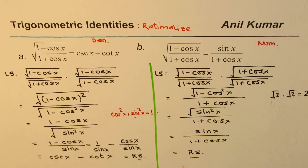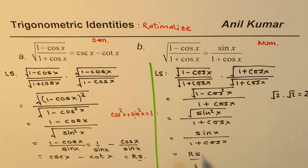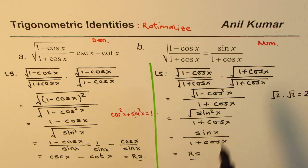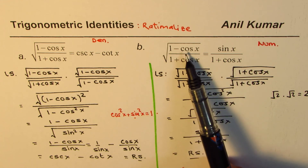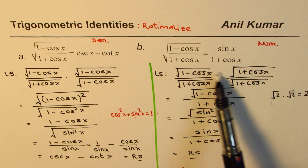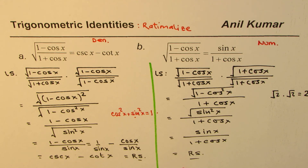So we can easily prove this identity. What we have understood in this process is that such identities can be proven using the technique of rationalization, and we should be able to identify which part to rationalize. In this case, sin x was the key: (1 minus cos x) times (1 plus cos x) gives sine squared x, and that guides the idea of rationalizing the numerator. I hope you now understand the important concept of when to rationalize and how to rationalize.